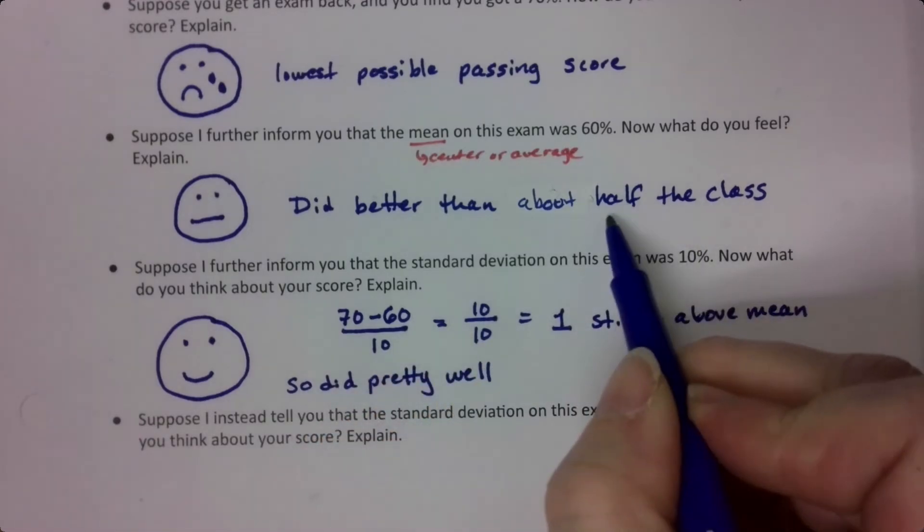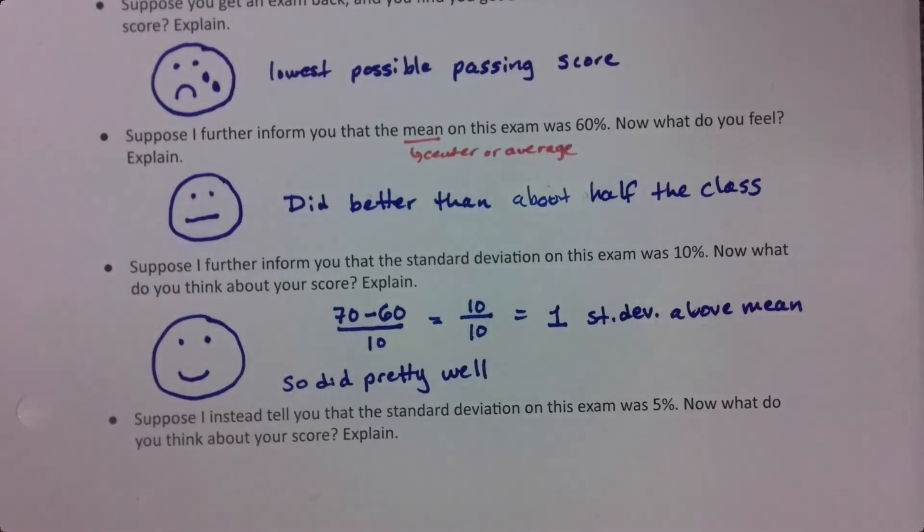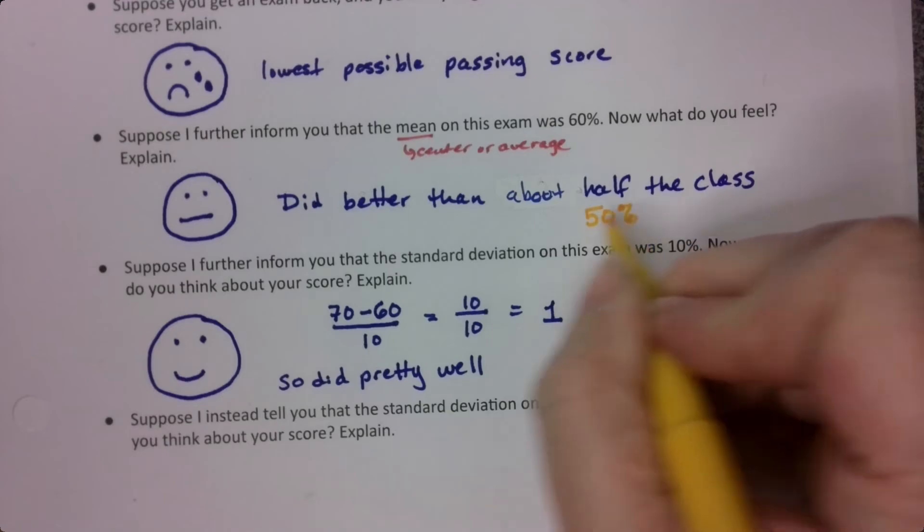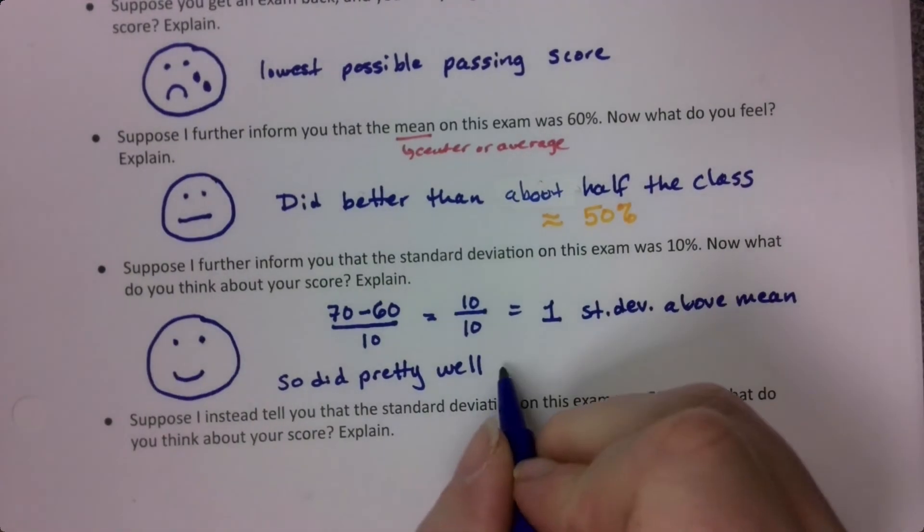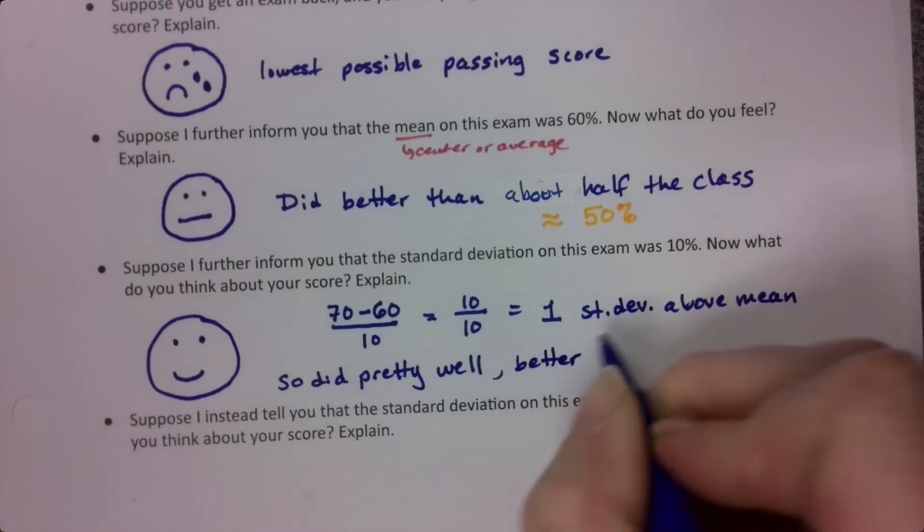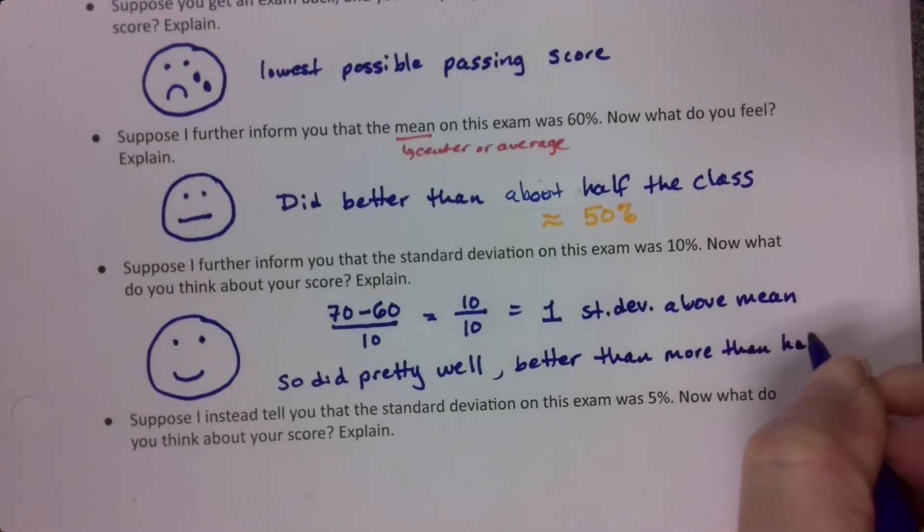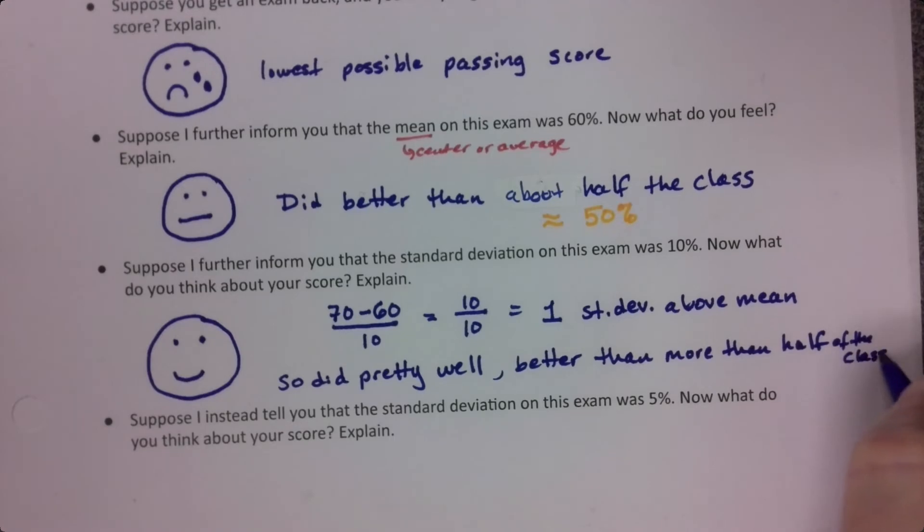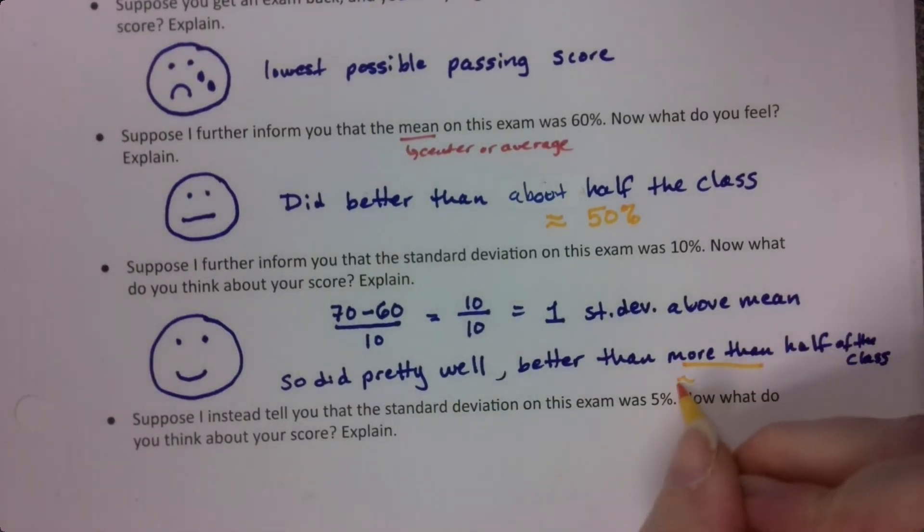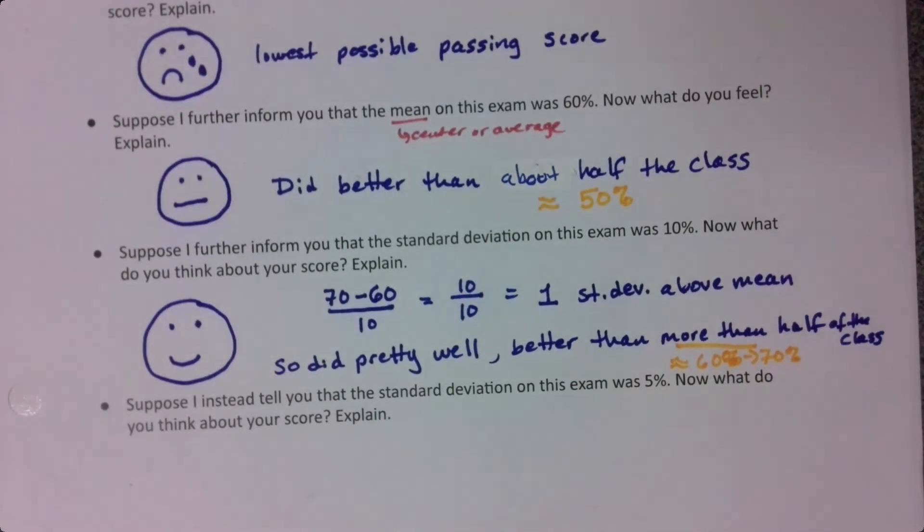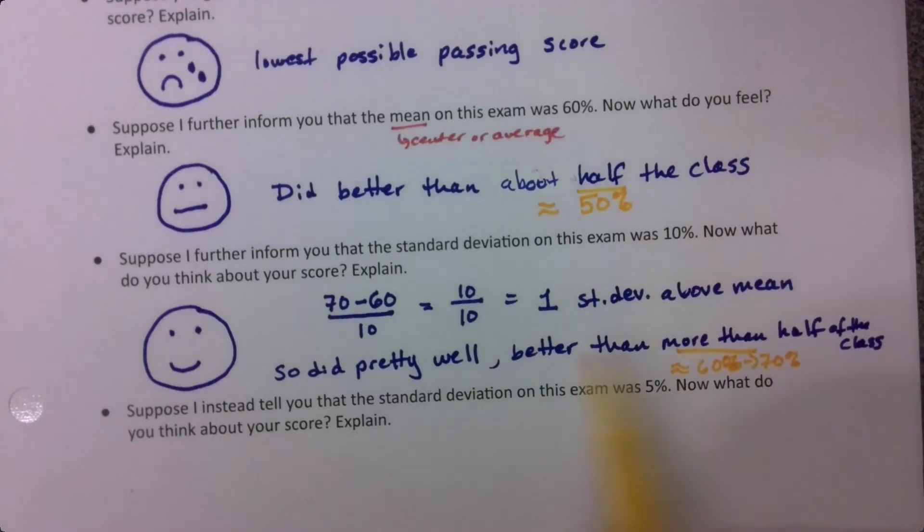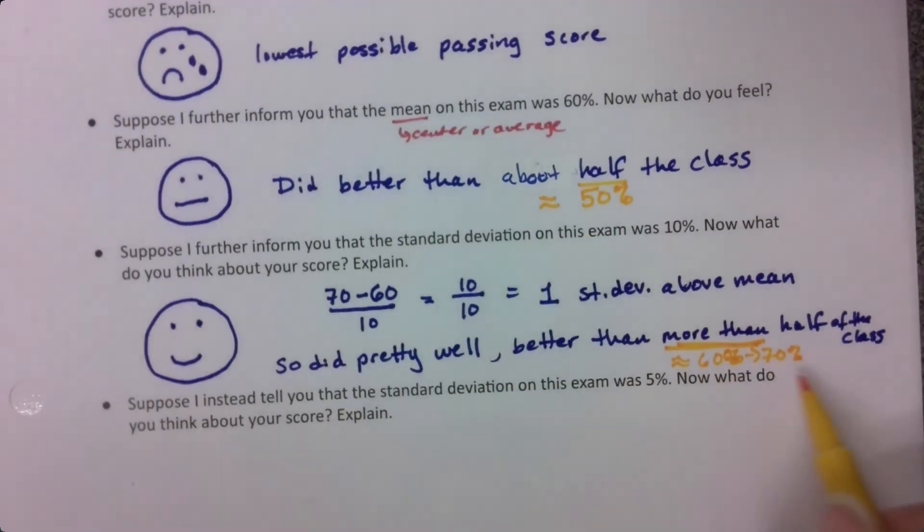Instead of being about half the class, which would be about 50 percent, you now have reason to believe you might be better than about 60 to 70 percent of the students. I can tell you it's around 60 to 70, I mean it depends - 60 percent to 70 percent of the class. That's not important. I'm not going to test you on that or anything. It's just to give you a sense of what this means. So half is about 50. So you did better than about half, about 50. But now you know you're better than about 60 to 70 percent.